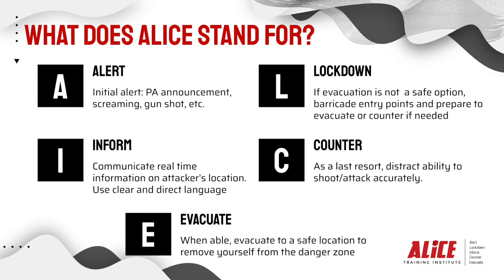L is the lockdown portion of our drill. If evacuation is not a safe option, barricade entry points and prepare to evacuate or counter if needed. I is for Inform — communicate real-time information on an attacker's location using clear and direct language. C is for Counter. As a last resort, distract the ability of the shooter to shoot accurately. E is Evacuate. When able, evacuate to a safe location to remove yourself from the danger zone. Each one of these situations can be used to deter intruders and to get you to safety during a dangerous situation on campus.